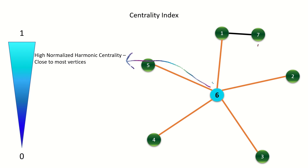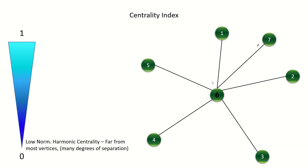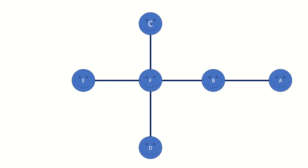On the other hand, vertices with low normalized harmonic centrality will have relatively few connections and are probably many degrees removed from the other vertices in the graph. A vertex with the highest possible normalized harmonic centrality of 1 will be connected to every other vertex in its graph, like vertex 6 in this graph. If we model people as vertices in a social network, then vertices with high harmonic centrality would represent influential people who are well connected, and vertices with low harmonic centrality would represent people with little influence due to few connections.